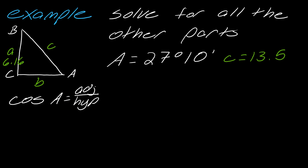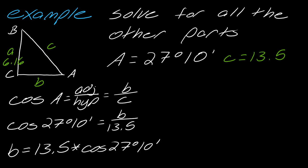We're going to use cosine in this case, adjacent over hypotenuse. In this case, that's going to be b over c. I can plug in this information: cosine of 27 degrees and 10 minutes equals b over 13.5. I can set up b like this, and keeping my significant digits in mind, I get b equals 12.0.